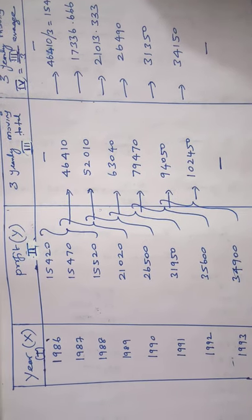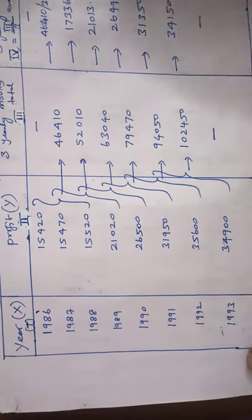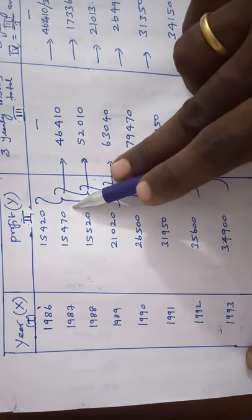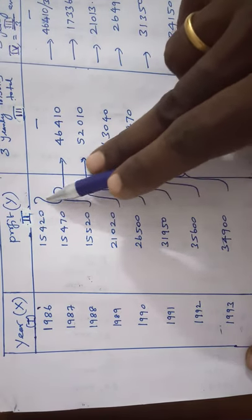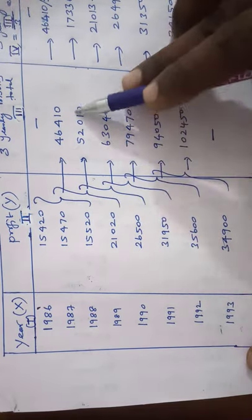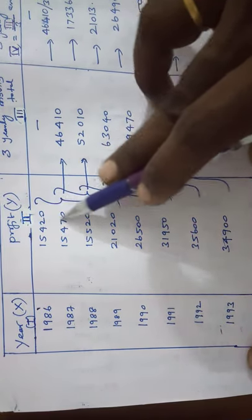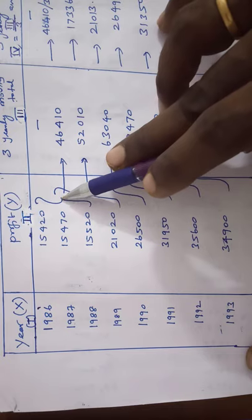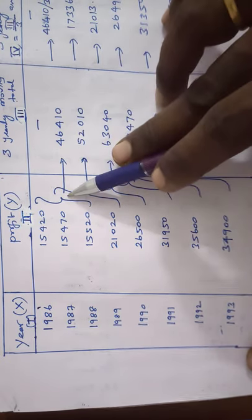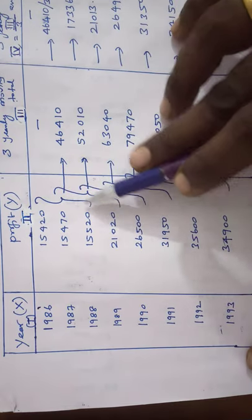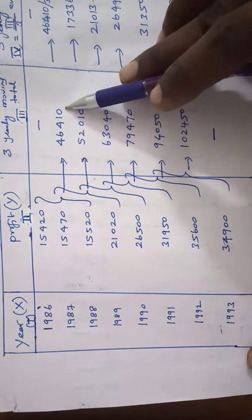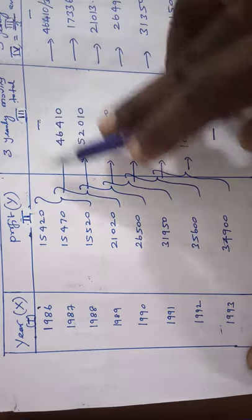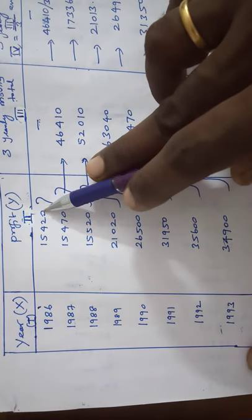In the seasonal variation, first you take the 3-yearly moving total. First you take the first 3 entry values, adding these 3 values. This can be put into the 2nd place. The 2nd place can be taken as adding these 3 values, put into the 2nd place is 46,410. First row is empty. Again, leave the first value.